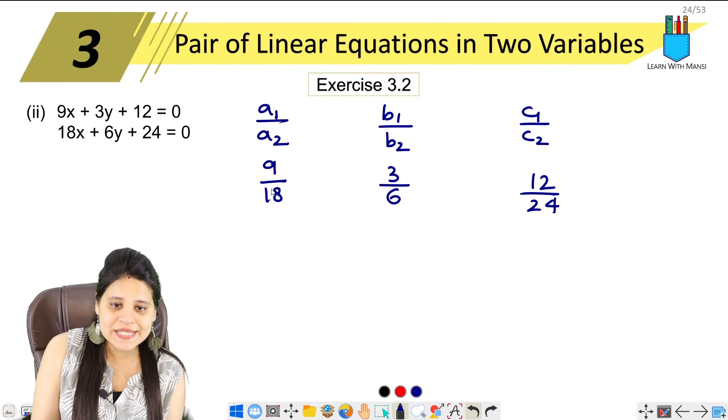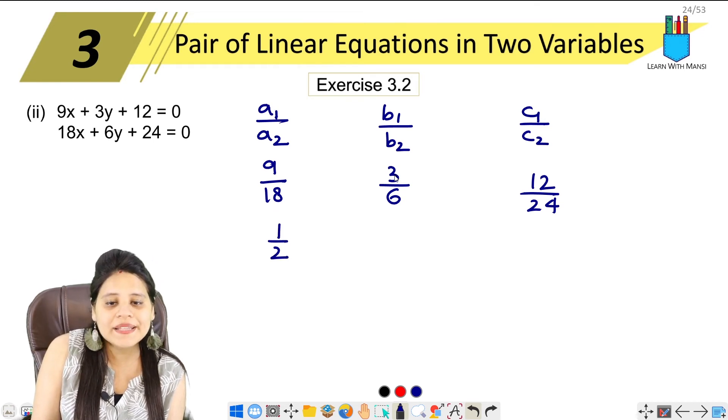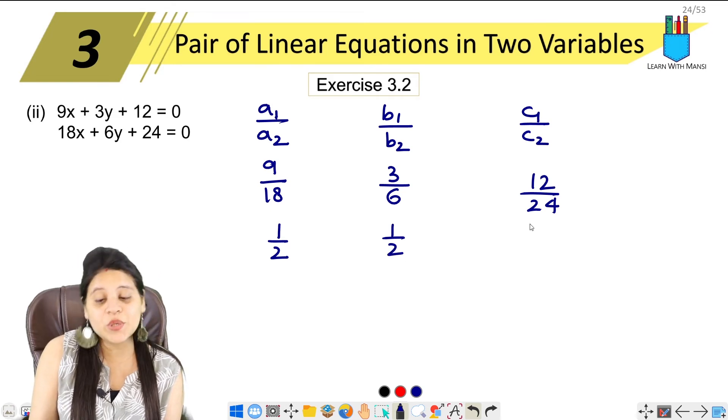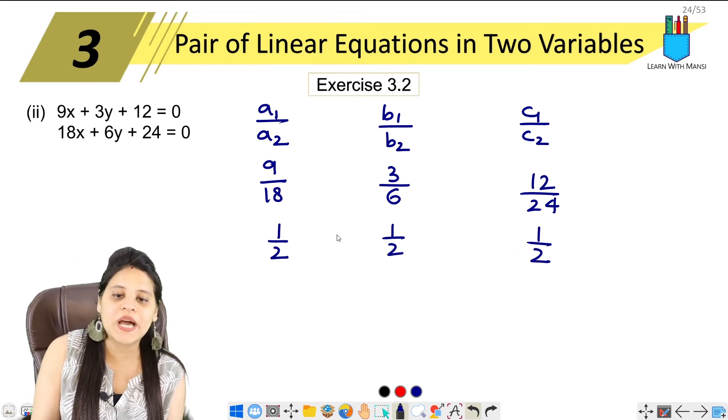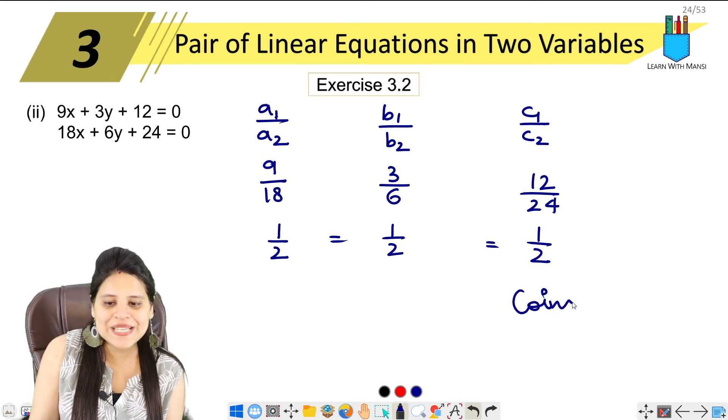Now we see here, 9 and 18 gives us 1 upon 2. 3 and 6 gives us 1 upon 2. 12 and 24 gives us 1 upon 2. So we see here, all three equals are equal. That means the lines are coincident.